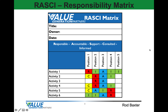Let's talk about a responsibility matrix. In this example, we're going to talk about a RASCII, and RASCII stands for five roles: responsible, accountable, support, consulted, and informed. On the matrix, we have five positions listed across the top horizontal axis, and six activities or tasks listed on the vertical left axis. We would simply assign a role to each position associated with an activity — for example, responsible, accountable, or informed, as in activity number one.